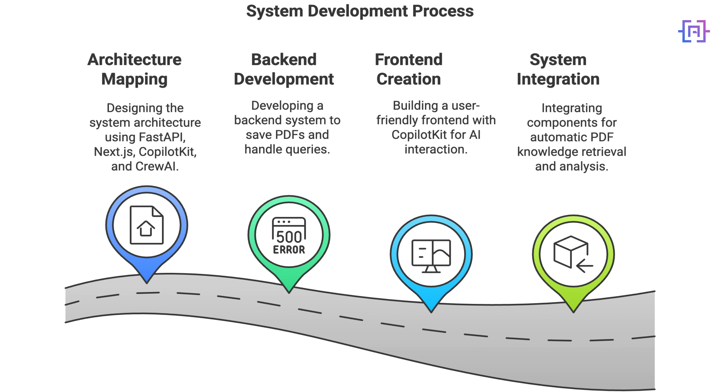And there we have it — from a pile of PDFs collecting digital dust to a living, breathing AI agent that knows exactly where everything is and can serve it on a silver platter. Let's do a quick recap: we mapped out a neat architecture — FastAPI plus Next.js plus CopilotKit plus CrewAI. We spun up a robust back end that saves PDFs and handles queries. We built a clean CopilotKit front end so you can chat with your AI easily. We integrated everything to automatically retrieve, analyze, and deliver knowledge from your PDFs in seconds. This is just the start — you can add user-specific security, scale up with vector databases, or even do multi-document cross-referencing.